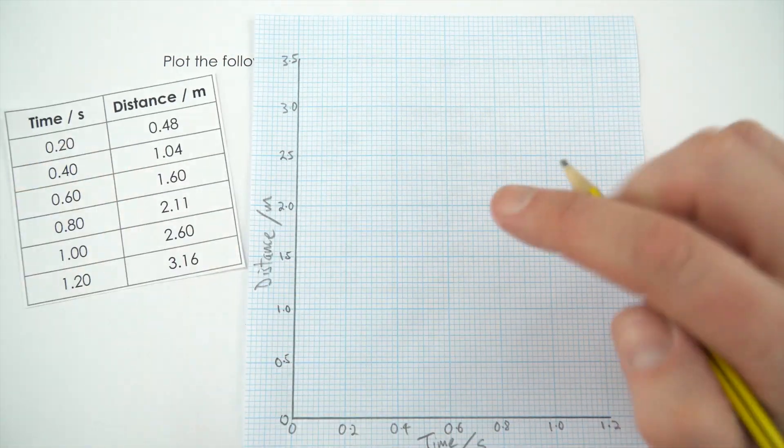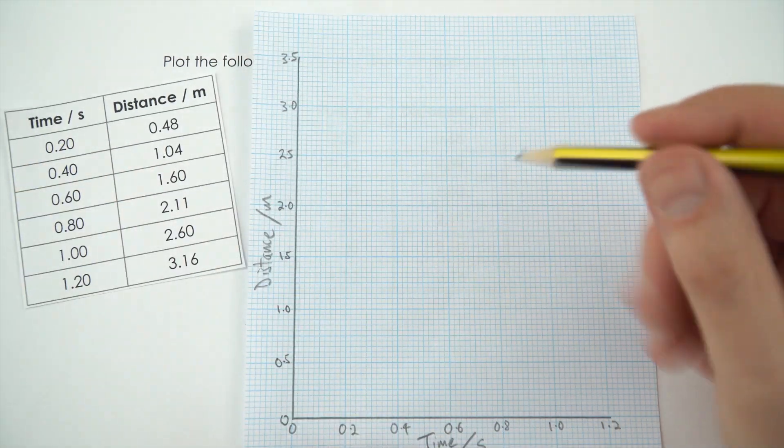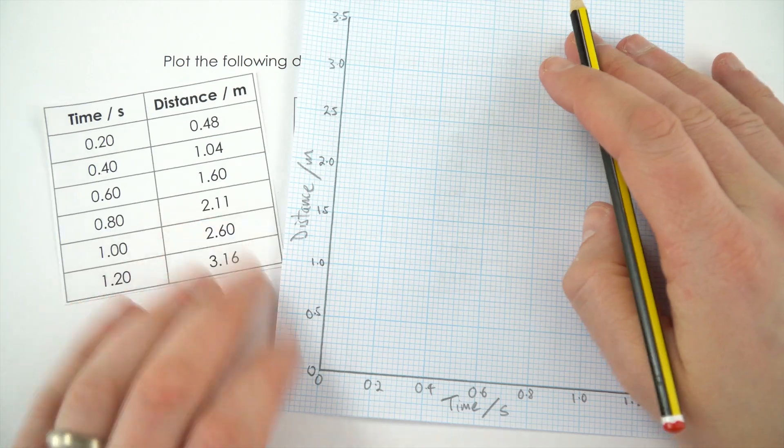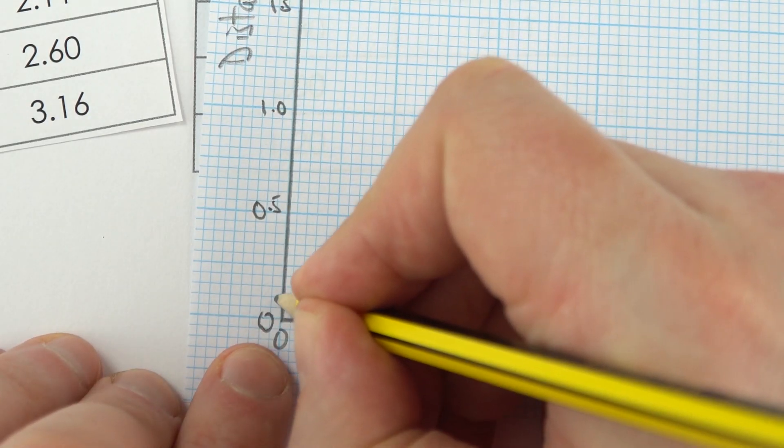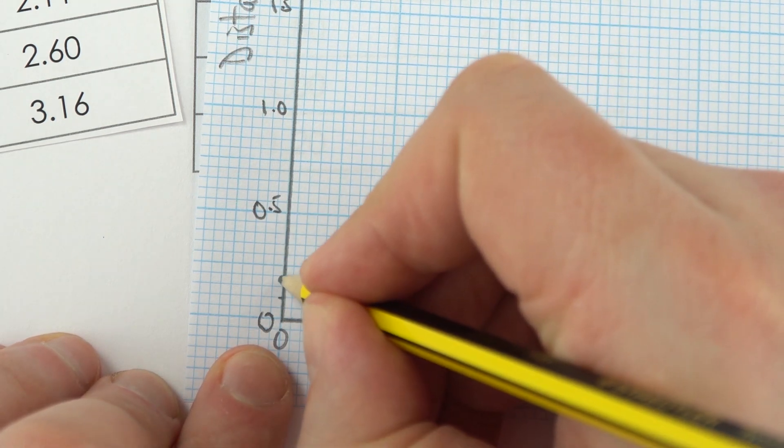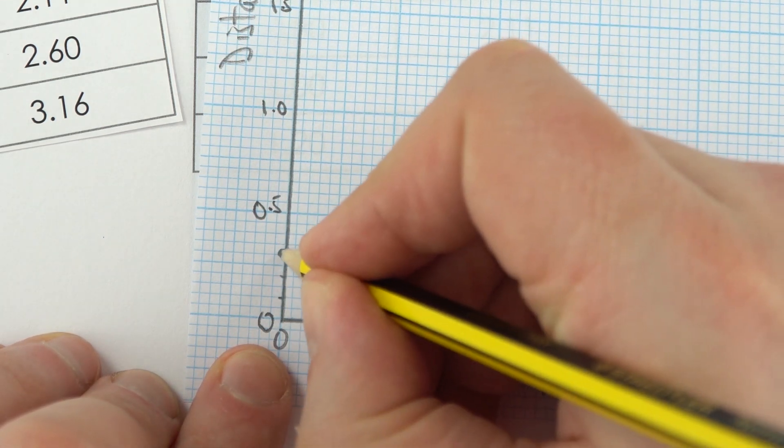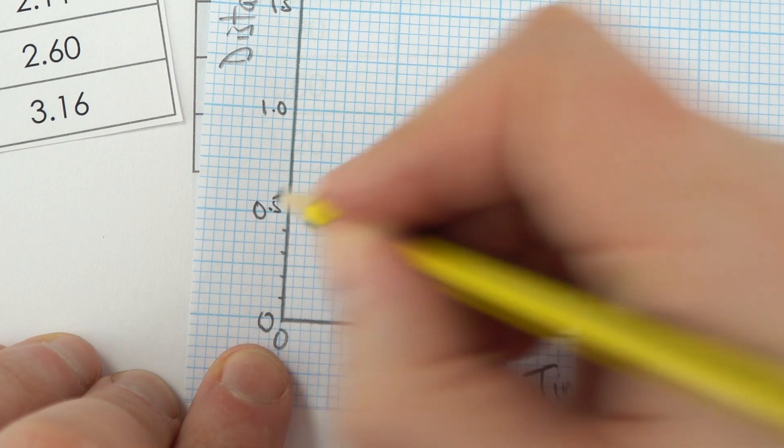When it comes to plotting the data, it's always worth doing this in pencil in case you make a mistake. What we can see on the side is if this is 0.5, then every two of these small squares equals 0.1, so that's 0.1, 0.2, 0.3, 0.4, 0.5.